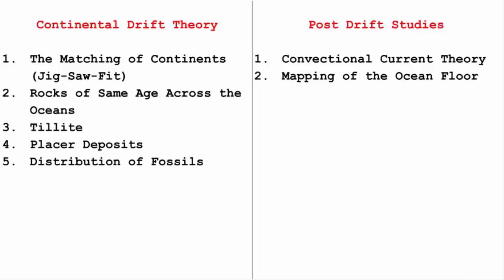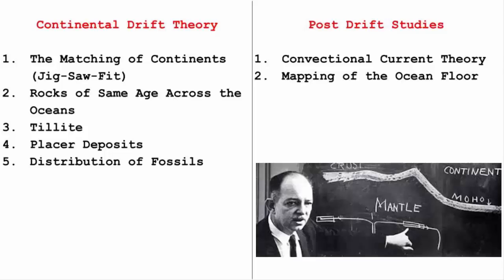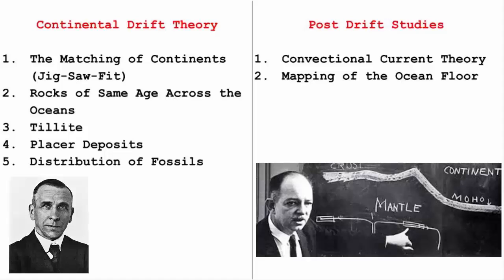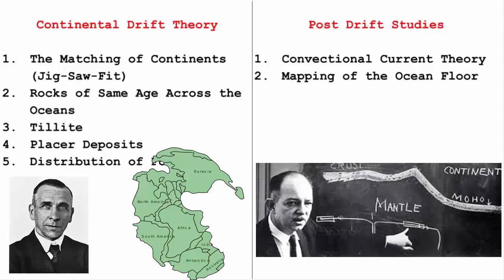The post-drift studies focused on the concept of sea floor spreading — the ocean floor gets pushed to the opposite side due to volcanic eruptions at the crest, making the sea floor spread — presented by Harry Hess in 1961. Meanwhile, the continental drift theory by Alfred Wegener argued that all continents were once a single continental mass named Pangaea, which then began to split into smaller ones, giving the world its present shape.